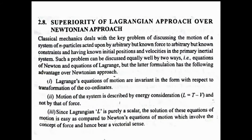For a single particle the Newtonian approach is significant, but for a large number of particles we go for the Lagrangian approach. There are important facts that make the Lagrangian approach superior. First: the Lagrangian equations of motion are invariant in form with respect to transformation of coordinates. There are three types of coordinate systems — Cartesian, spherical (also called spherical), and cylindrical. When converting from one system to another, the Newtonian equations change, but the Lagrangian equation of motion remains the same form.